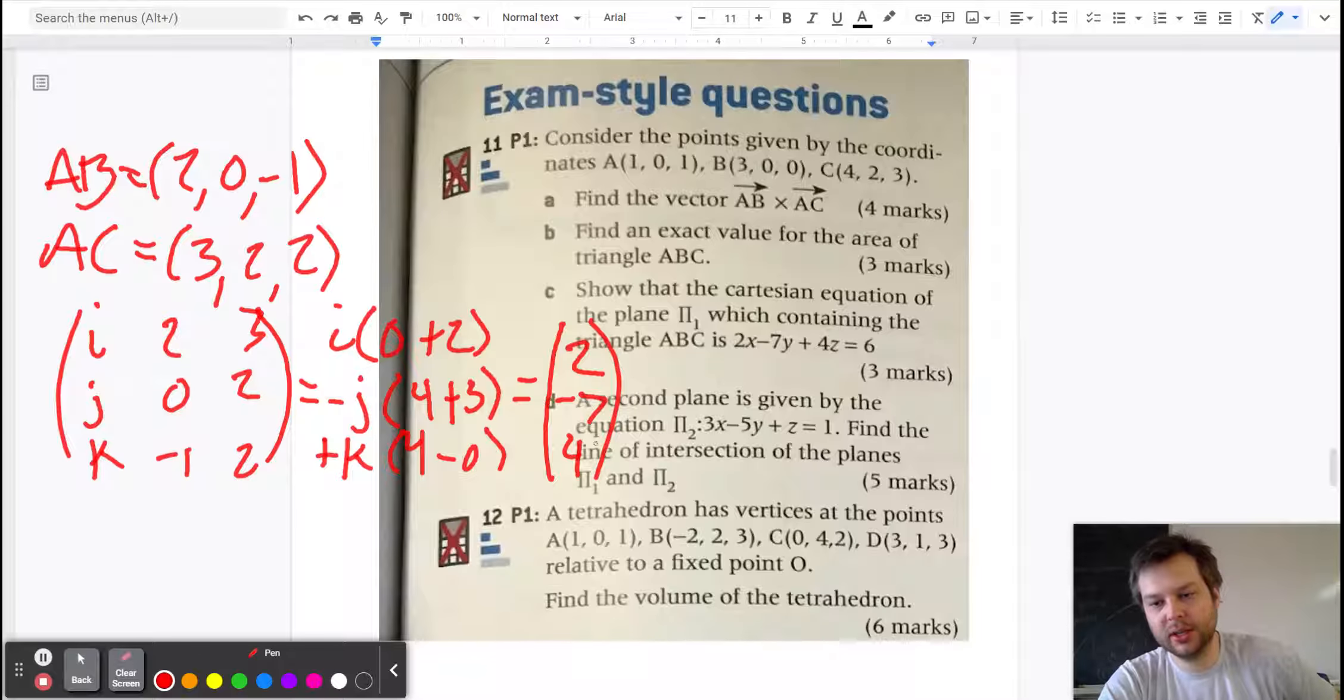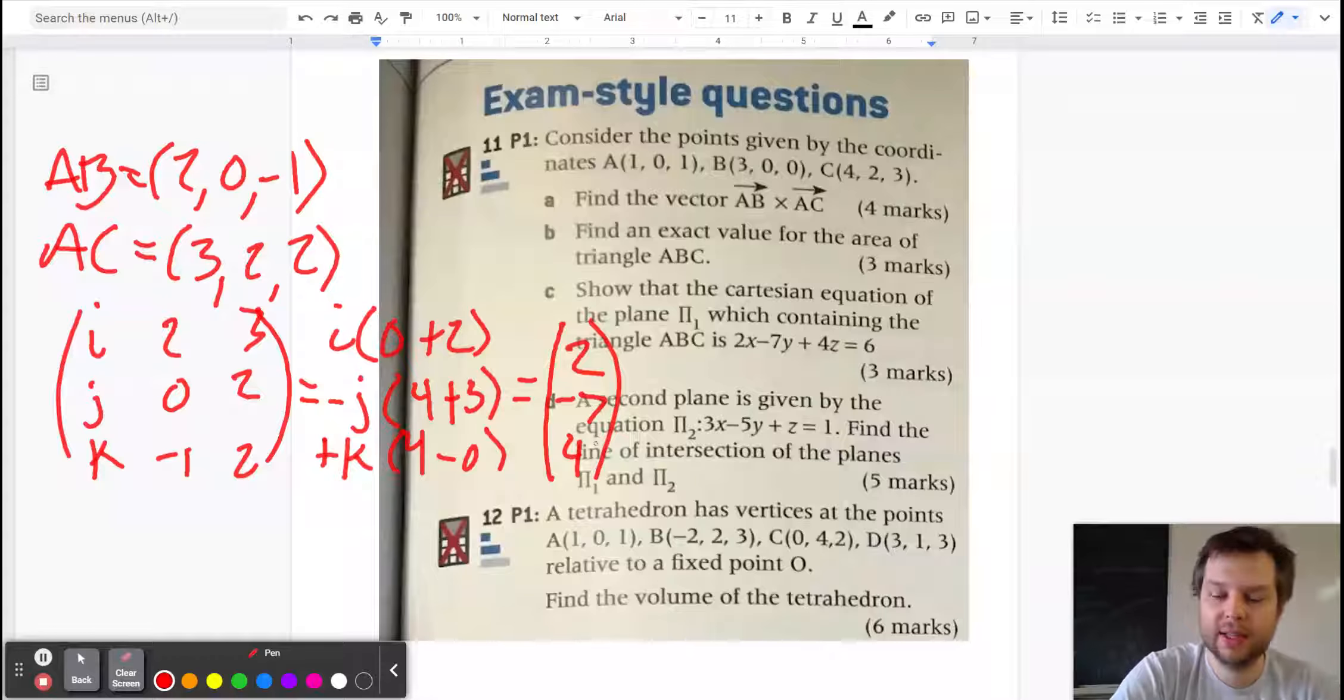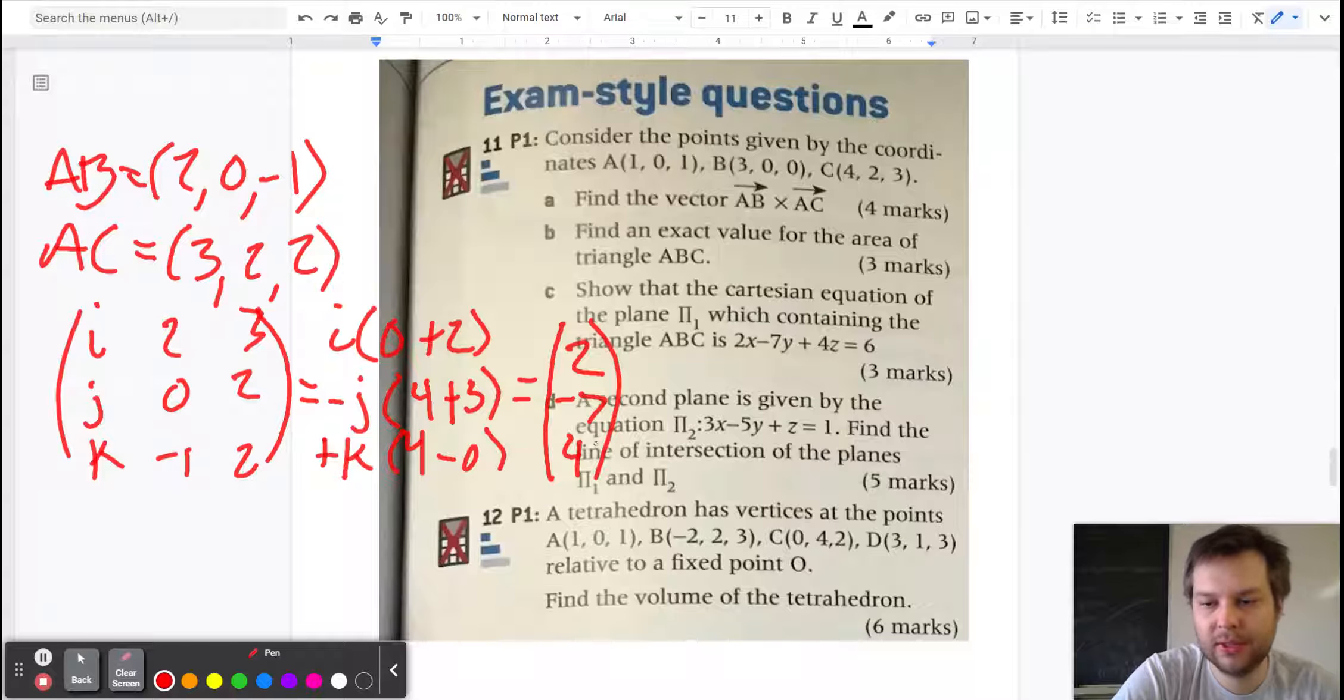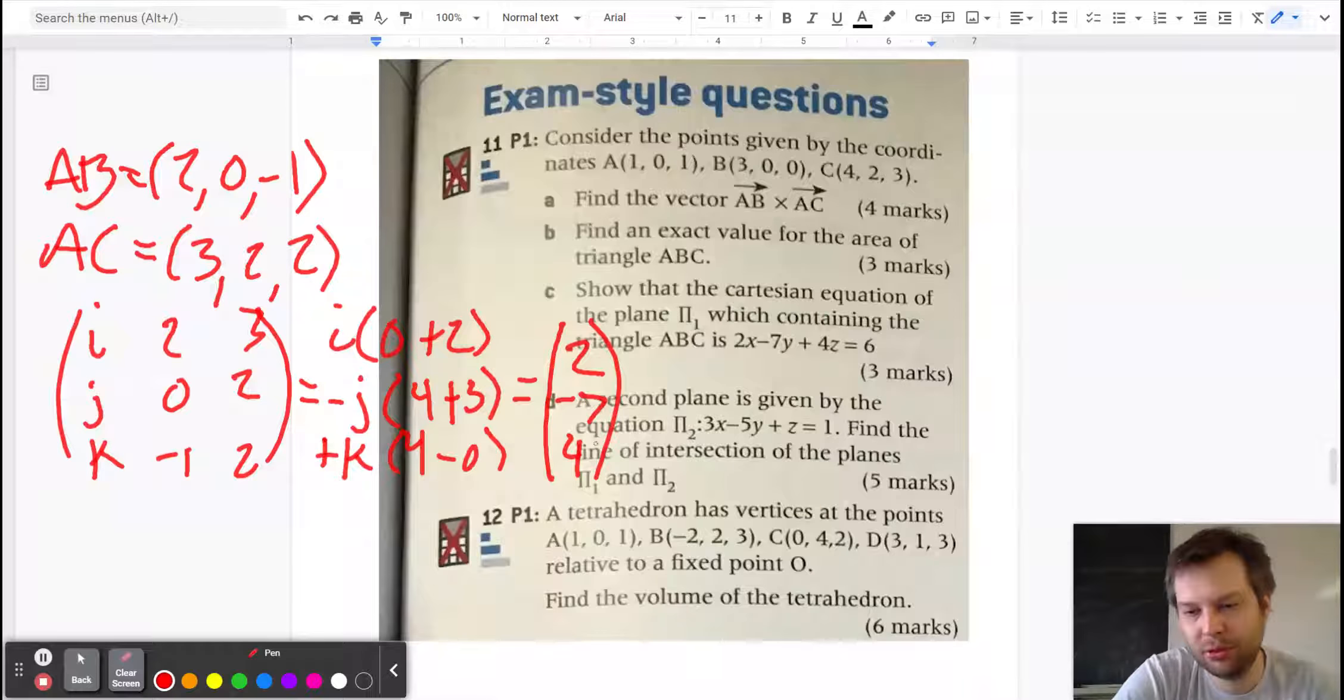You could also just use the formula that is given to you, the a2b3 minus a3b2 and go through it that way.